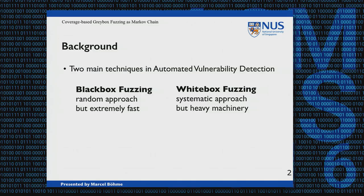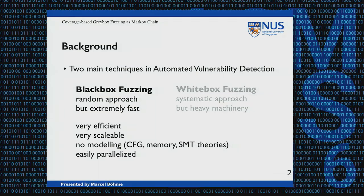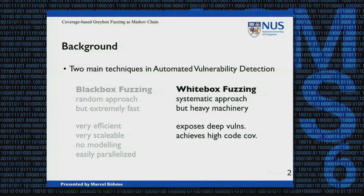There's also white box fuzzing, which is a more systematic approach. The idea is that you want to exercise different paths in your program and are able to reach deep vulnerabilities. You can cover as much code as possible. There is symbolic execution-based white box fuzzing, which enumerates the paths in the program and generates inputs exercising different paths, but it requires heavy machinery — you have to do program analysis.